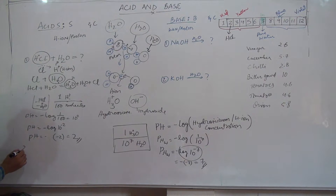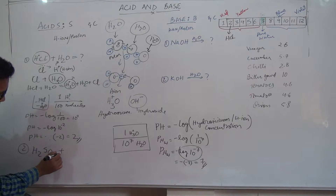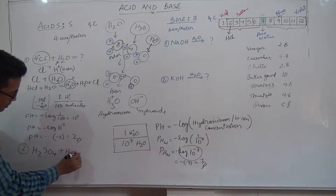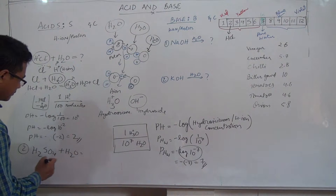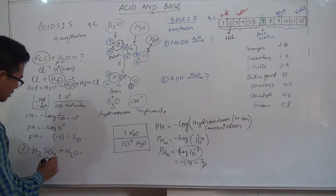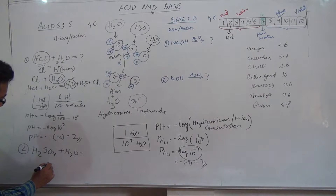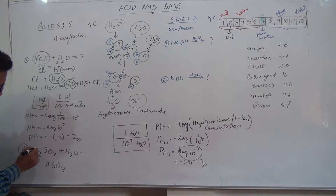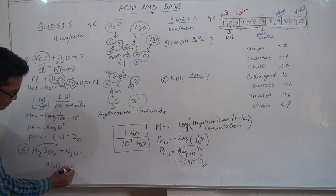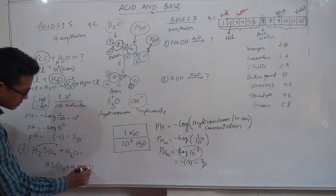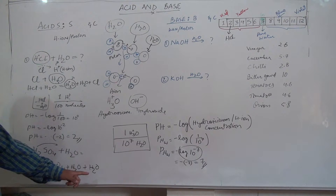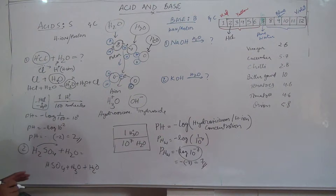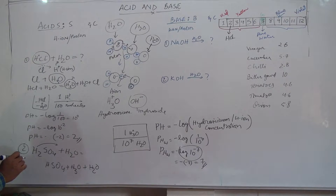Similarly, when you have sulfuric acid (H₂SO₄) and add water, you get HSO₄⁻ and hydrogen ions. The hydrogen ion is released and forms hydronium with the water molecules that are present in plenty.